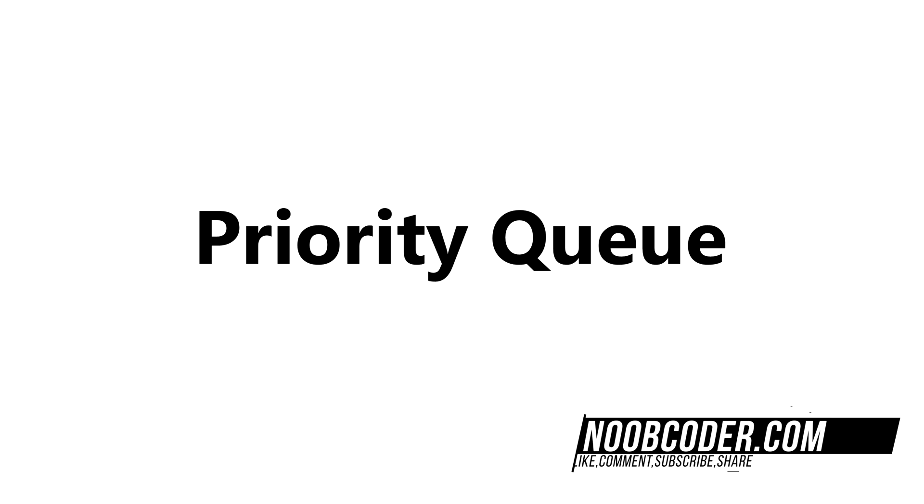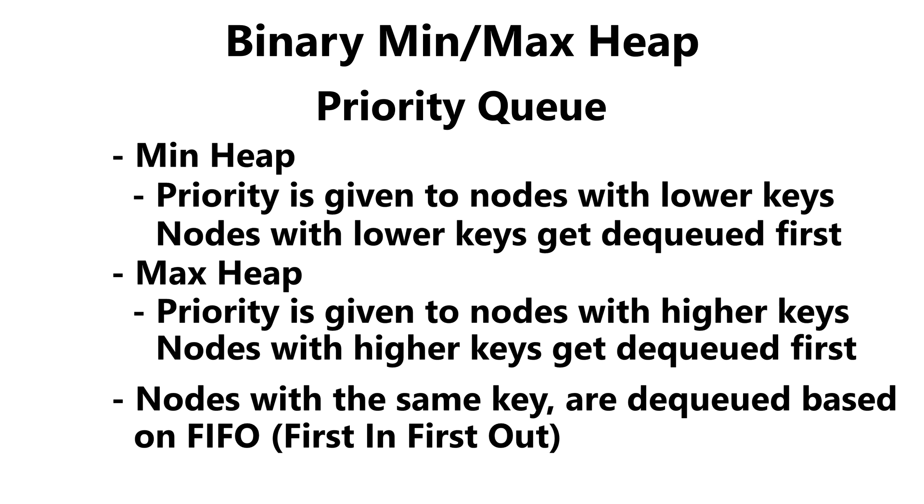It should be noted that every heap is also a priority queue. And a priority queue is the same as a regular queue, except that priority is given based on the key. So if I was using a minimum heap, for example, the lowest keys will be given priority first and get dequeued first. And if we were to have duplicate keys, the key that was inserted first would get dequeued first.